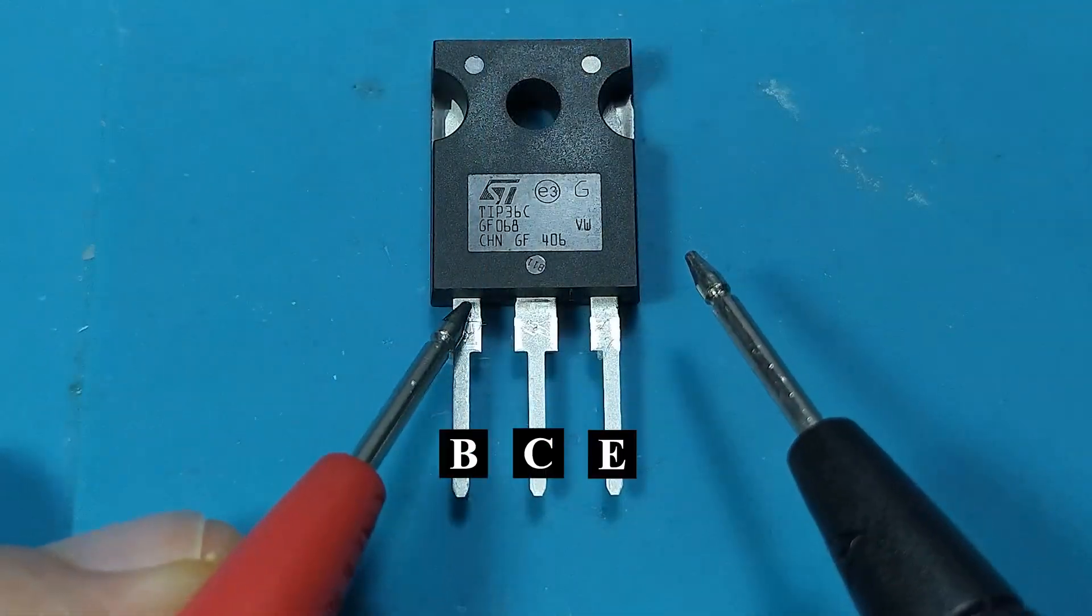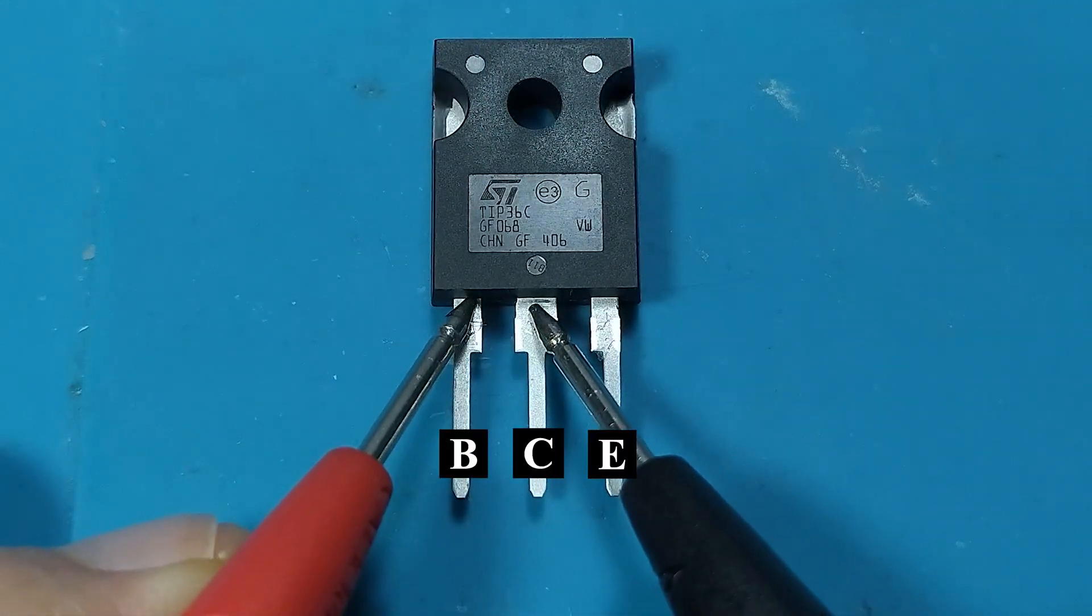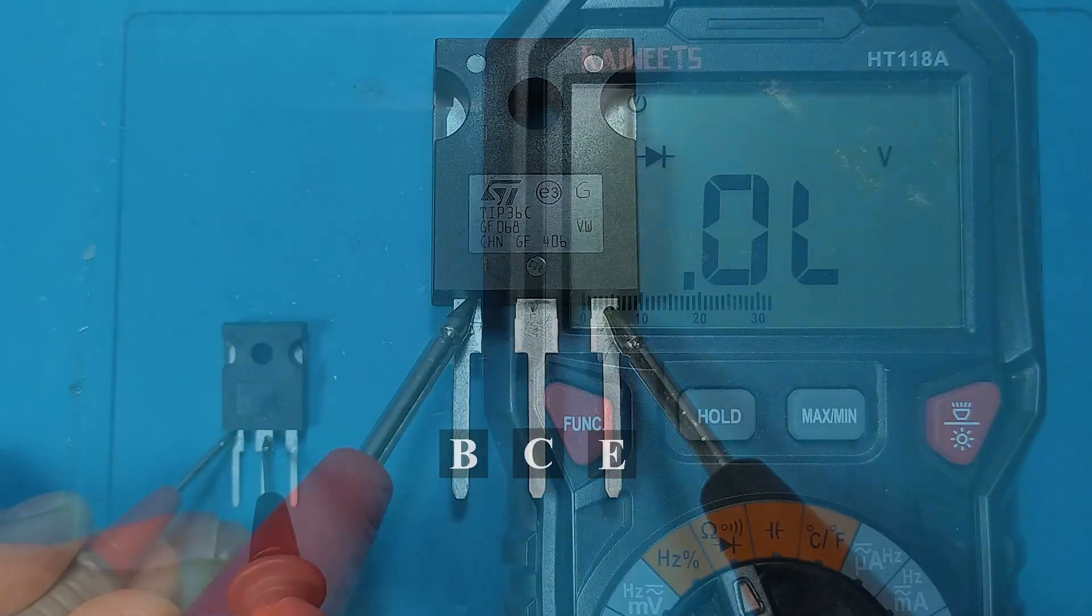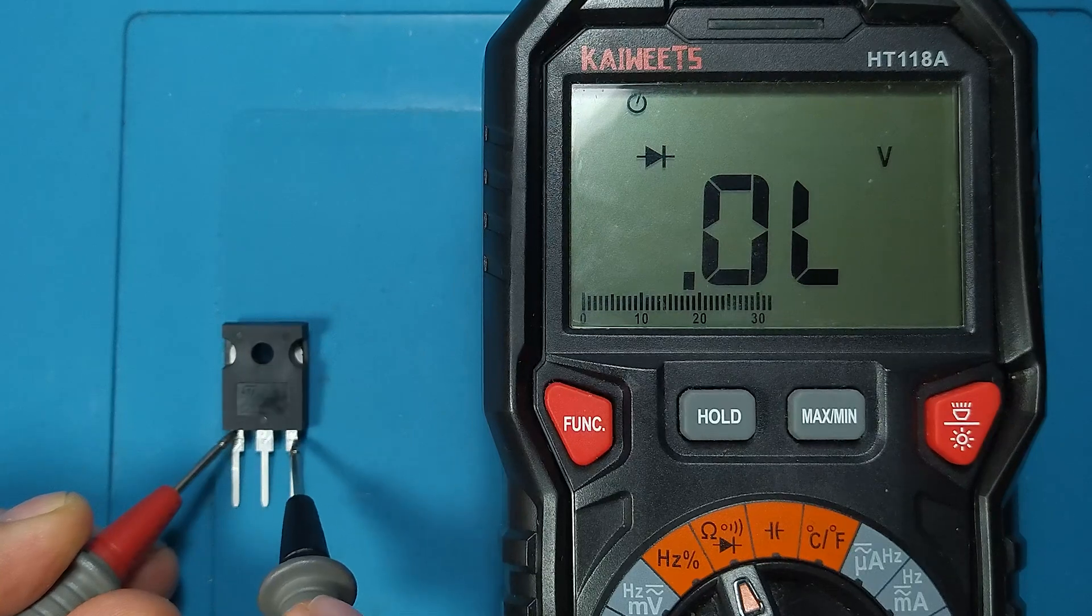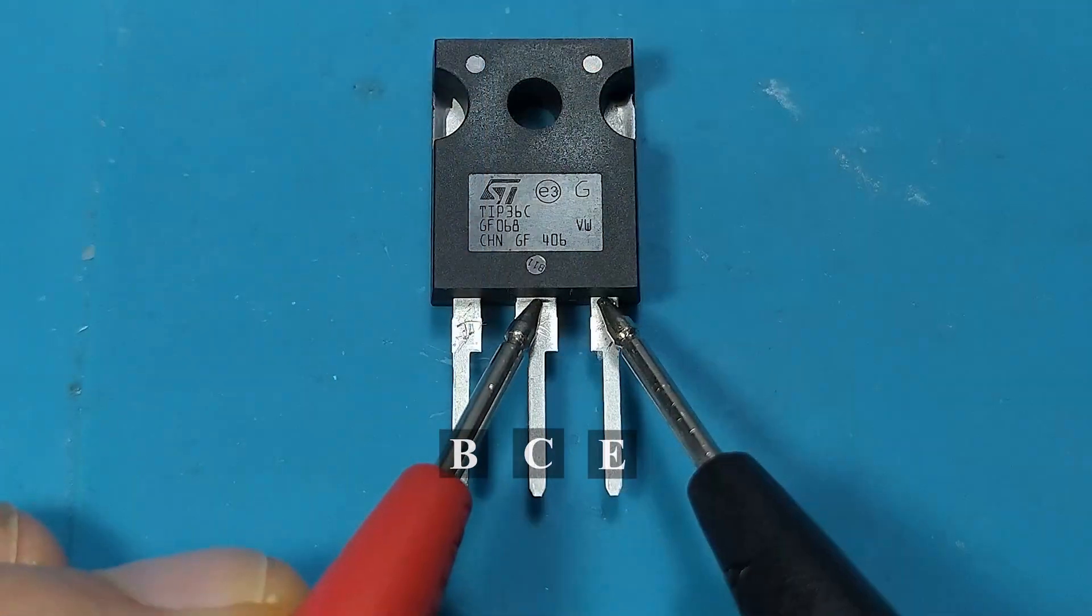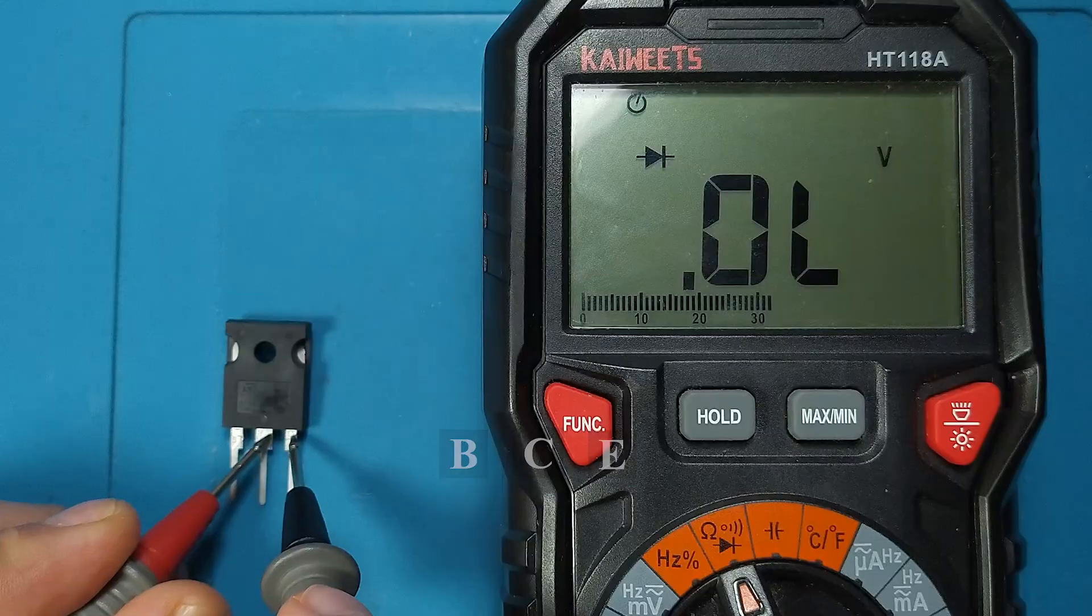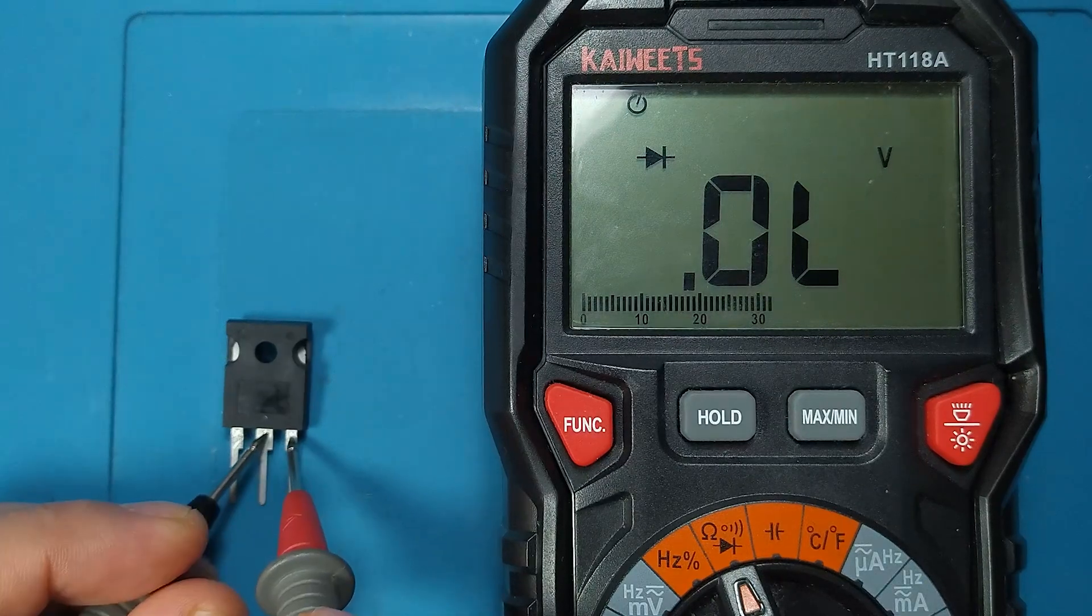With the red probe on the base and the black probe on the emitter and collector, we should not have any voltage drop. Measuring between emitter and collector, we should have no voltage drop regardless of polarity.